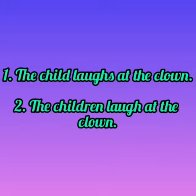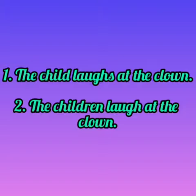In the first sentence, the subject was 'child.' Child is a singular noun. With a singular noun, we use a singular verb. So in simple present tense, we add S or ES to the first form of the verb when the subject is singular. As we saw in the first sentence, child is a singular subject, so we used a singular verb — we added 'S': laughs.